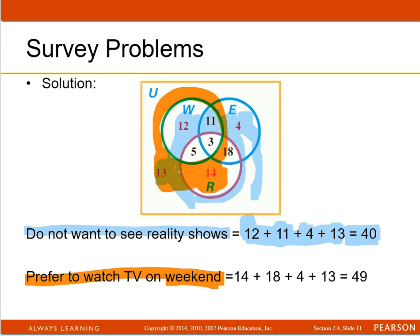Yeah, this circle is weekdays, so we need everything outside that circle, which would be the 13, the 14, the 18, and the 4. And that adds up to 49. All right.